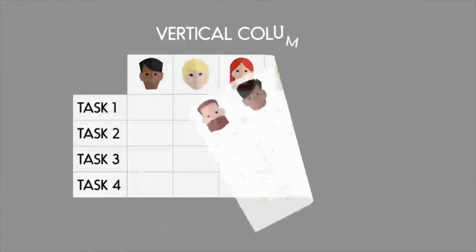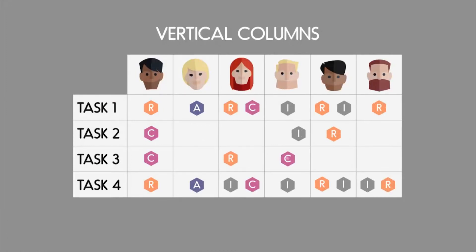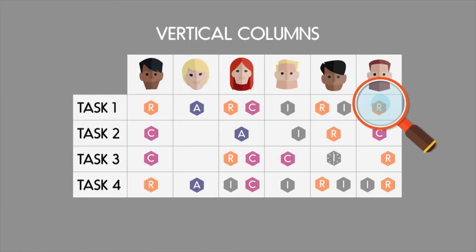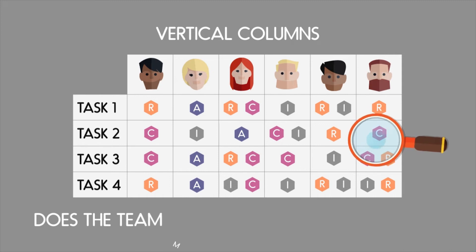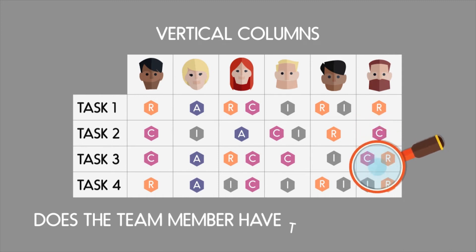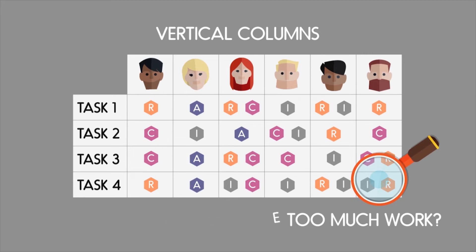Turning to the vertical now. Are there too many Rs on any one vertical column? Does this mean the team member has too much work on? Are their efforts being diluted across multiple different project tasks?